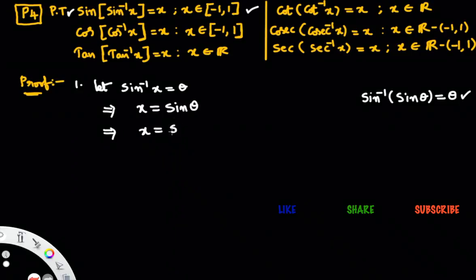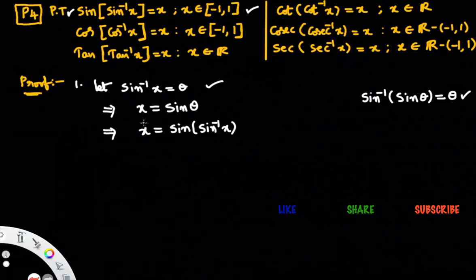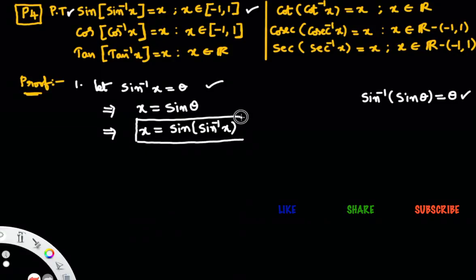So x equals sine of theta. What is theta? Theta is sine inverse x. So in place of theta, you write sine inverse x. We get that sine of sine inverse x equals to x. What we proved: sine of sine inverse x equals to x.